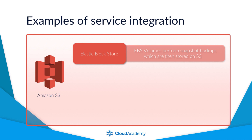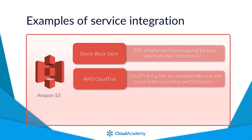Using S3 for this purpose makes your EBS snapshots highly available and highly resilient. Another example is logging — many services use Amazon S3 to store their logs, such as AWS CloudTrail. CloudTrail is a service that records and tracks all API calls made within your AWS account, recorded as events and stored within a log file which is then stored on S3. Due to the highly scalable and reliable nature of this service, it makes sense for other services to use S3 for purposes such as this.